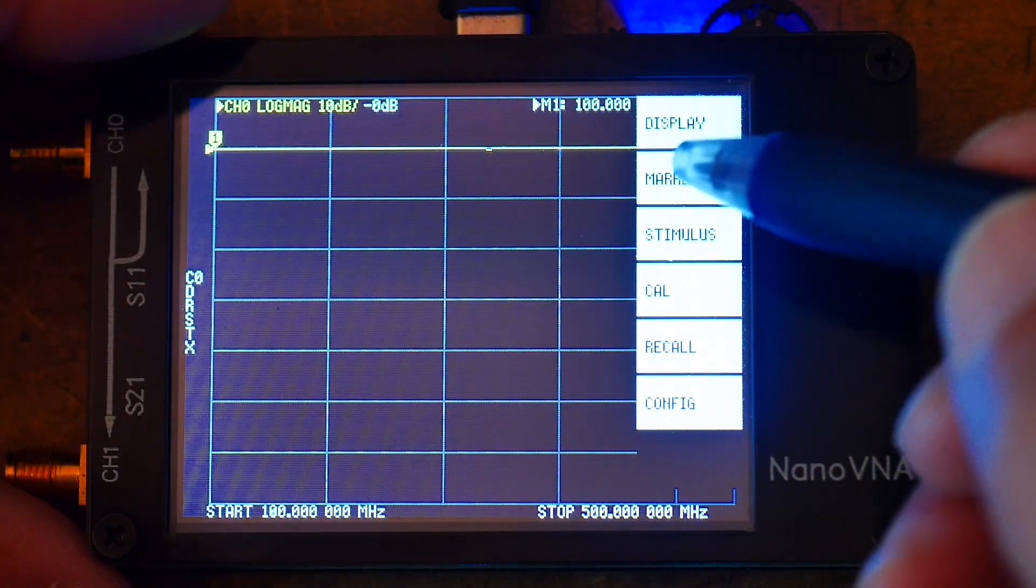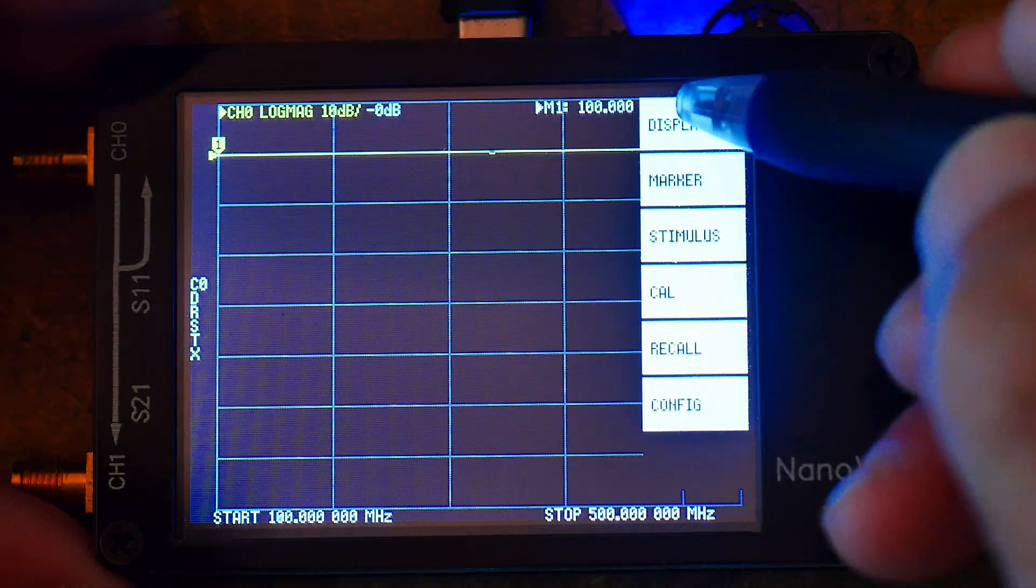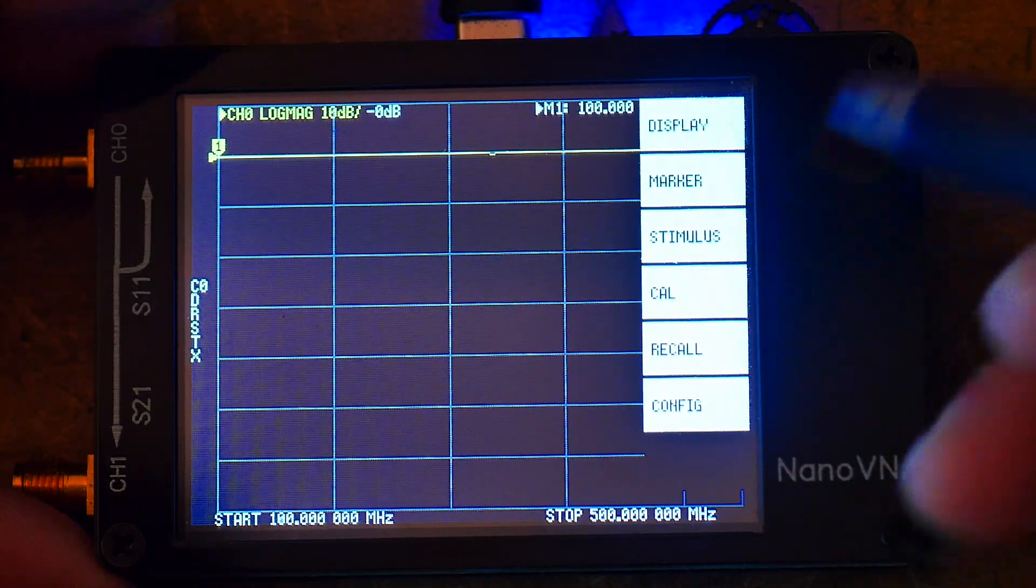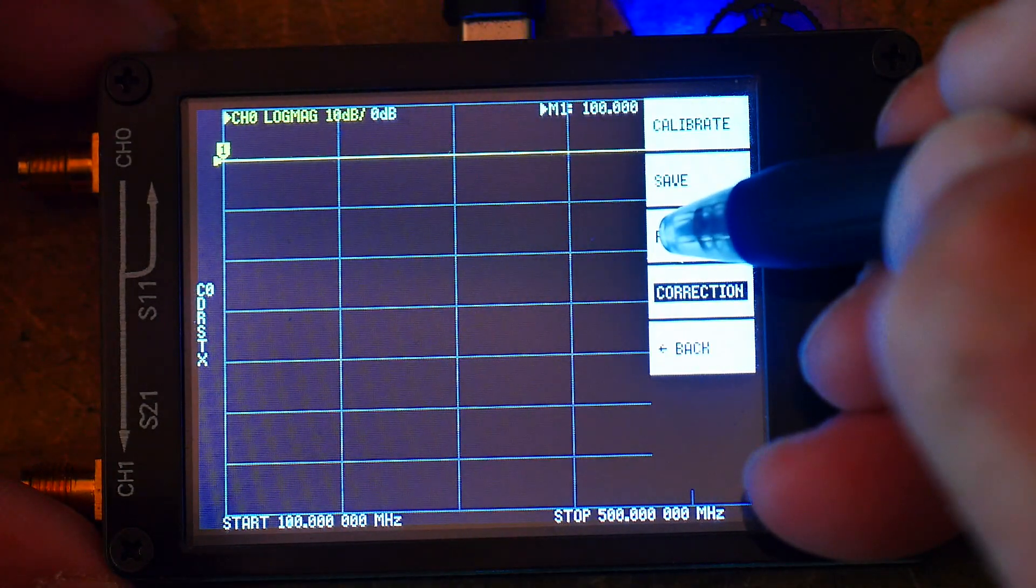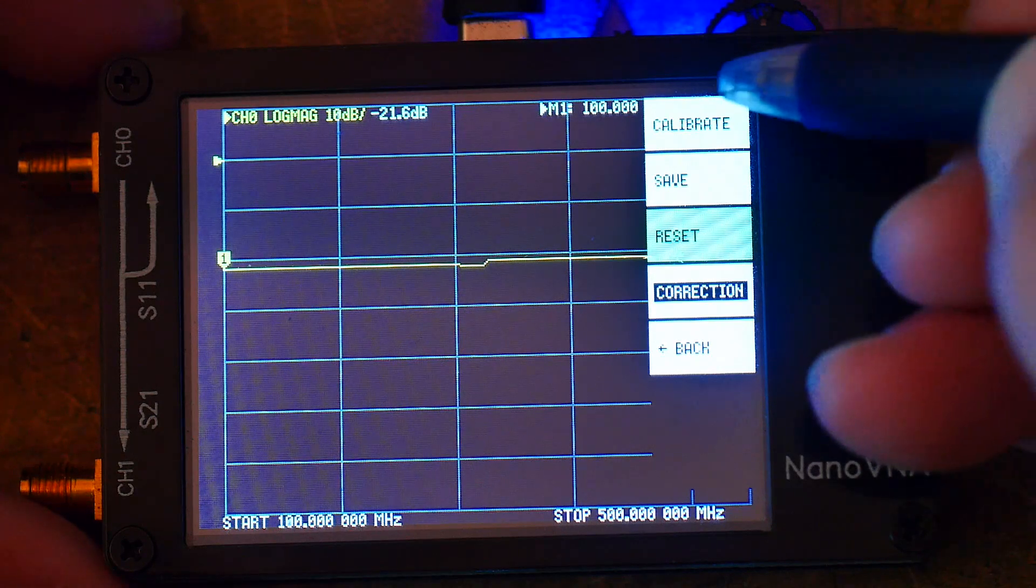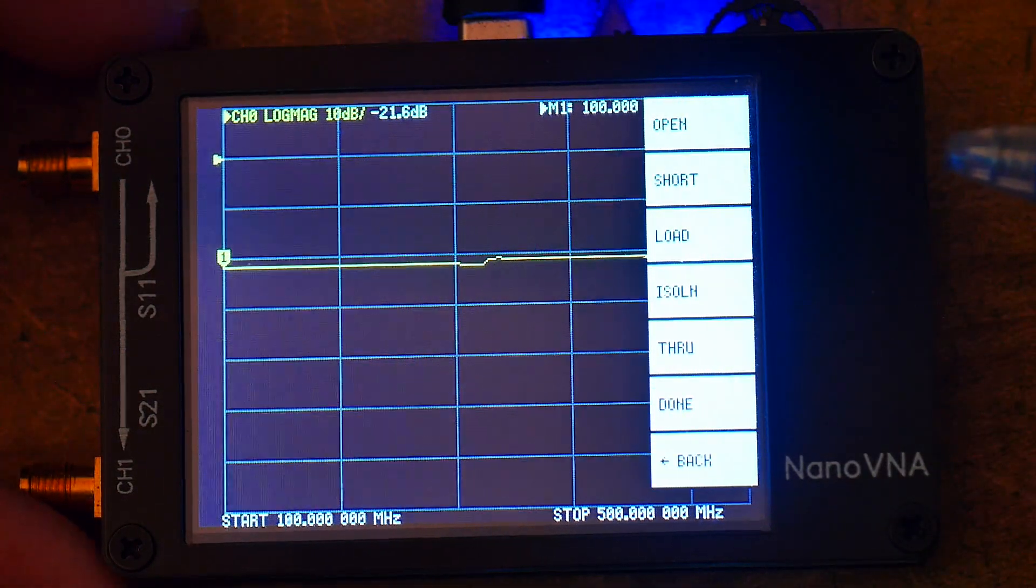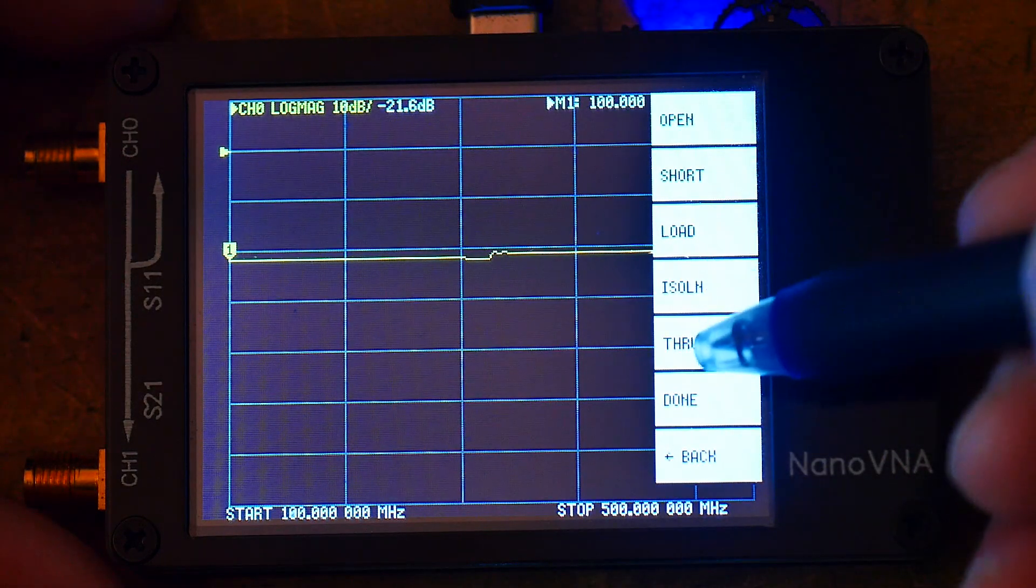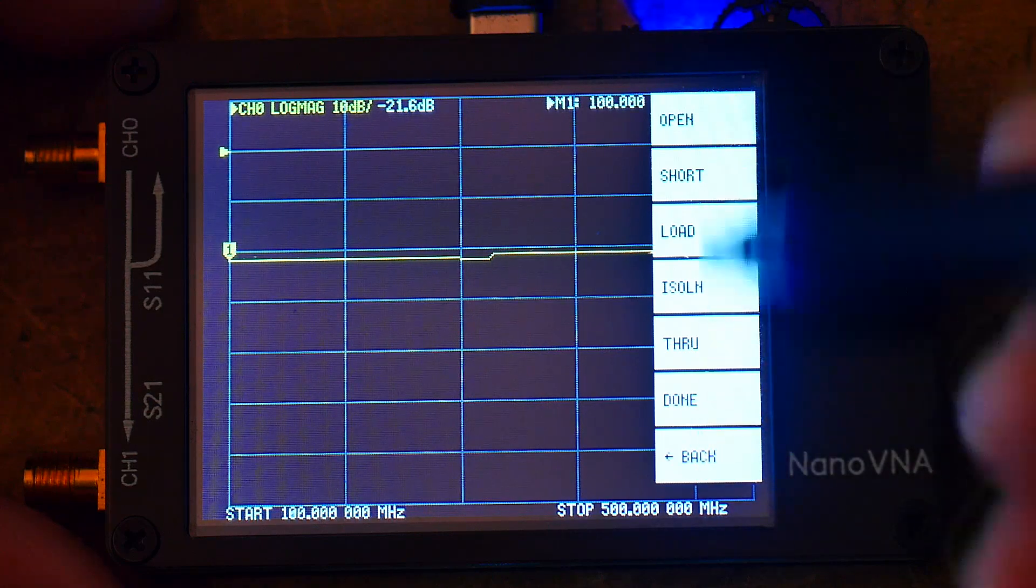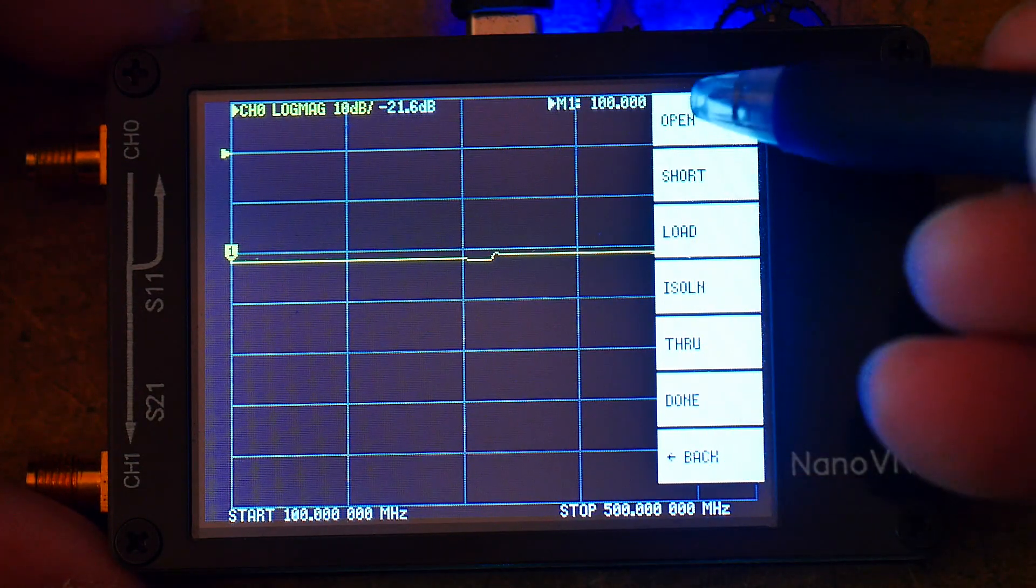The next thing we need to do is calibrate. So we're going to go to CAL calibrate. And I always hit reset. So click on reset. And now we go calibrate. And now we're in the calibrate menu. And now we'll see a list of things. Open, short, load, isolation, through, and done. And that's the order that you want to calibrate in. So you want to go from top down.